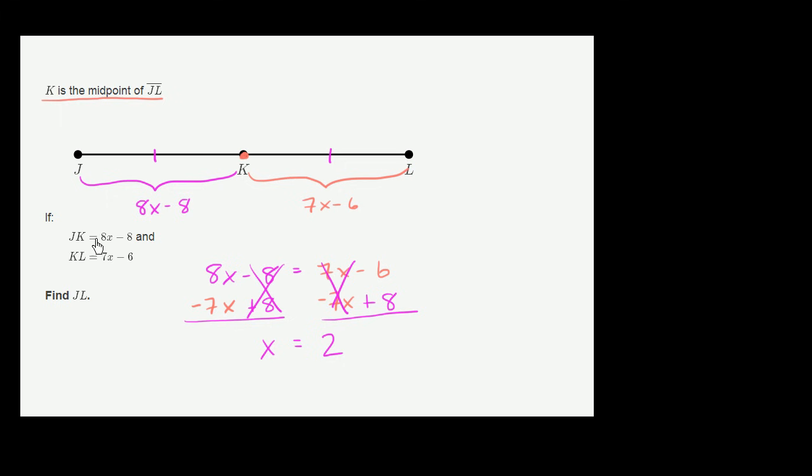So let's figure it out. So now we can figure out that JK, the length of segment JK, is equal to 8 times 2 minus 8. We know that x is 2 now. So this is equal to 16 minus 8, which is just equal to 8.